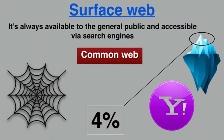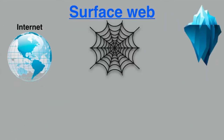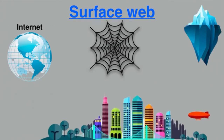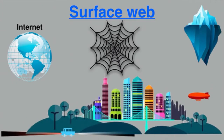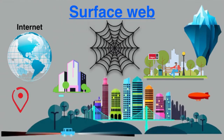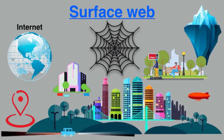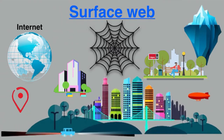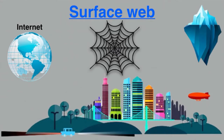Here is an example for better understanding. Let's imagine the internet as one big city. Like any city, it contains public places open to everyone, such as streets, avenues, and parks. Anyone can go there and look around, and you can easily find them on Google Maps. On the internet, these public places are known as the surface web.